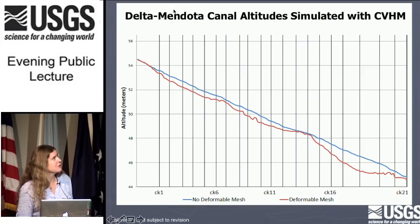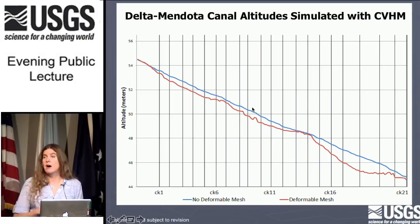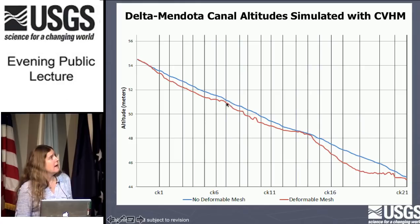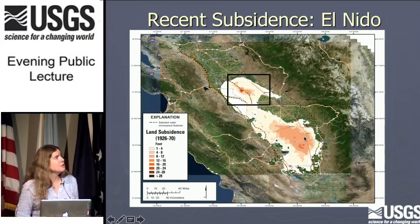Here's another way to look at that same information. The blue line is the original design elevation of the canal, and the red was created using the Central Valley hydrologic model simulating subsidence based on our data. Here it's a little clearer how these choke points affect the ability to move water.